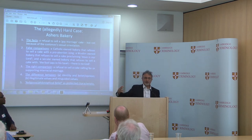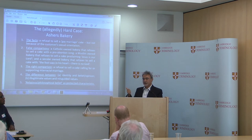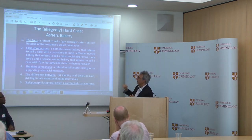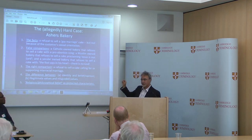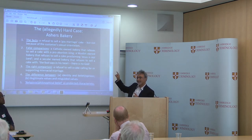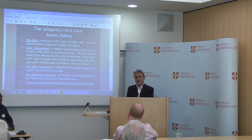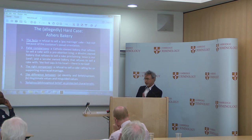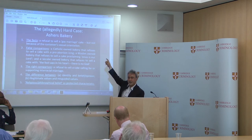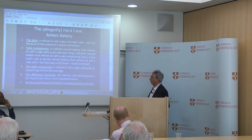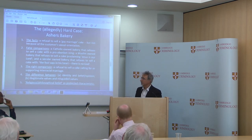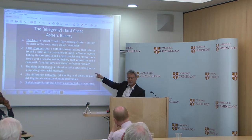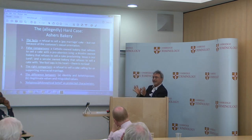Why is the comparison misguided? Because in these cases the refusal to provide the service first relied on values which are not morally repugnant — there is nothing morally repugnant in being a Catholic, in being a Muslim, or in being secular. The reason for the refusal to provide the service resulted not from the identity of the customer but from the views of the customer. And there is a huge difference between discriminating against others because of who they are — their identity — and discriminating against others because of their values. The right comparison for the Asher's Bakery case is a refusal to sell a cake calling for or supporting interracial marriage. People who refuse to support interracial marriage hold illegitimate values, and their refusal relies not on the views of the customer but on the identity of others.